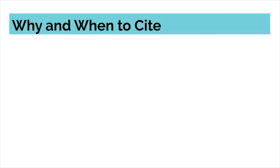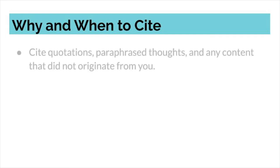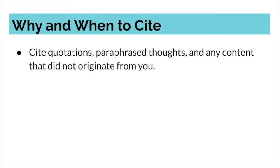First, let's discuss when to use a citation and why. An in-text citation is used whenever you are directly quoting or paraphrasing content that you got from a paper, a blog post, a newspaper or news website, etc. Basically, any time you're presenting an idea that came from someone else's work, you cite it.